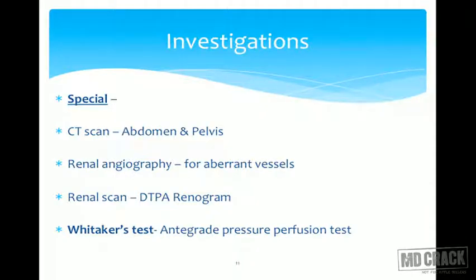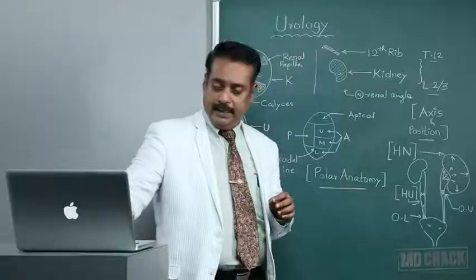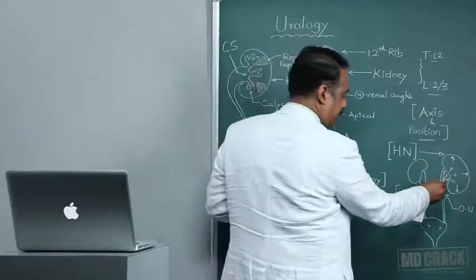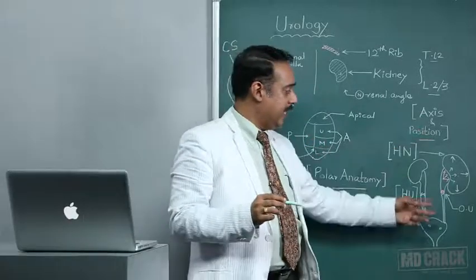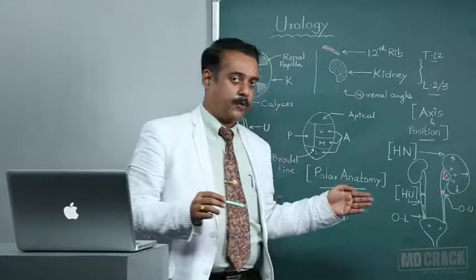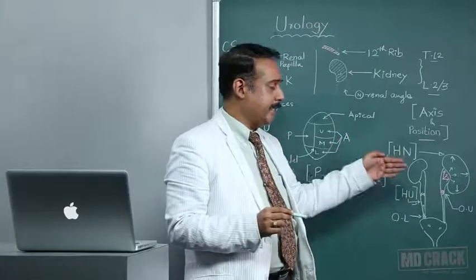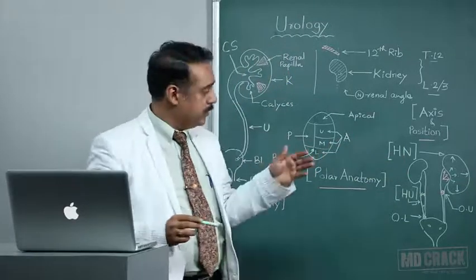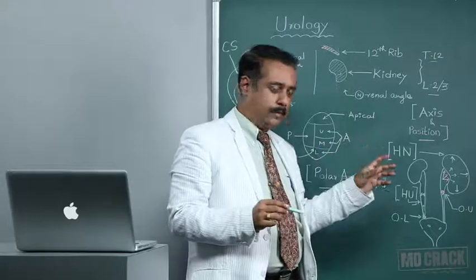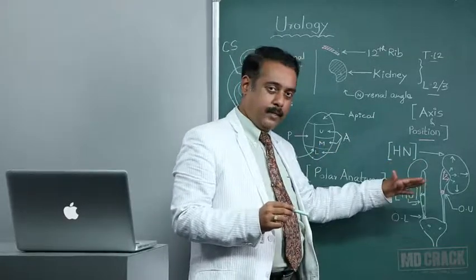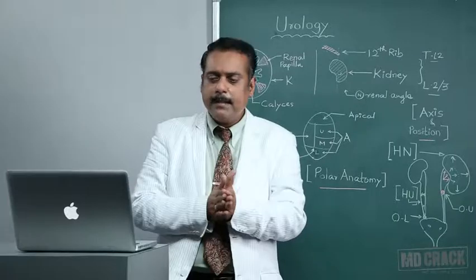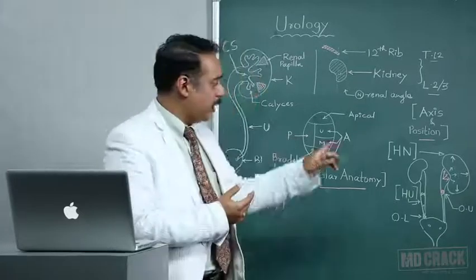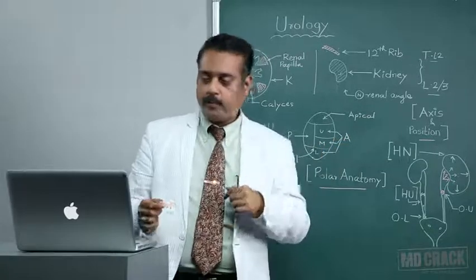The Whittaker test, first described by Robert Whittaker, is an antegrade pressure perfusion test in which a dye is injected into the pelvis and pressure is built up under positive pressure, gauging the obstruction as mild, moderate, or severe. Pressure below 9 mmHg is considered mild hydronephrosis; between 9 and 11 mmHg is equivocal; above 11 mmHg is considered very severe hydronephrosis. It can be performed at the bedside using a loin approach.